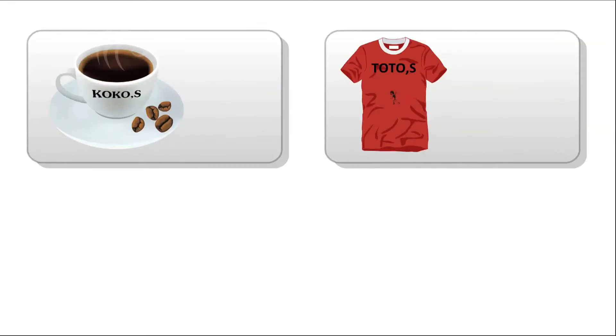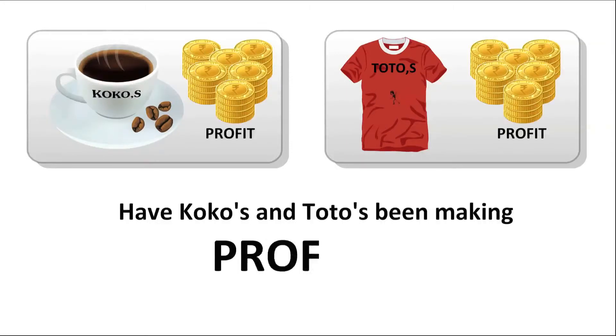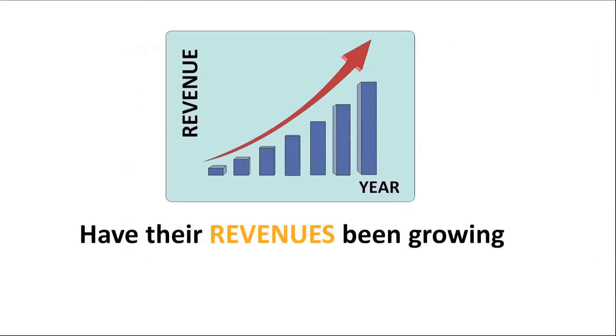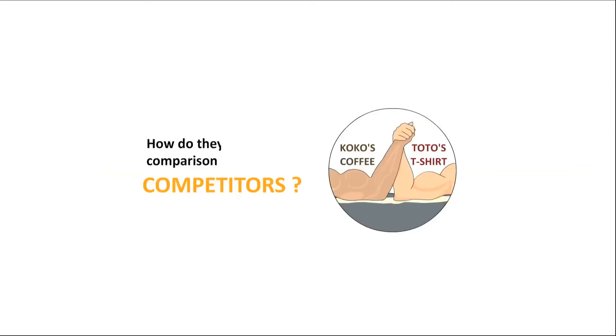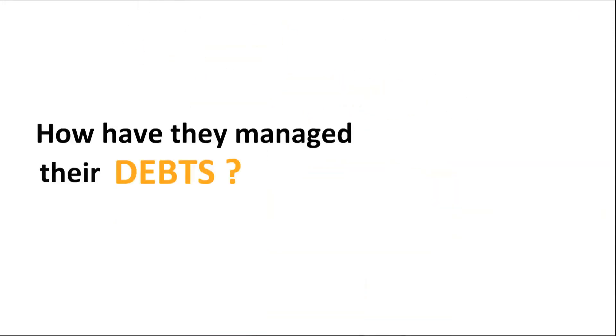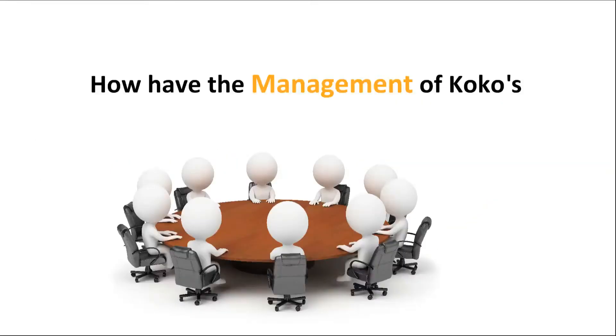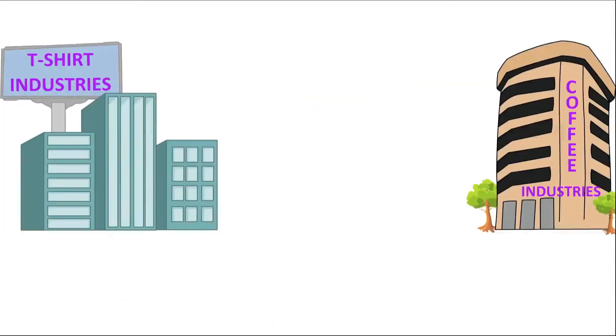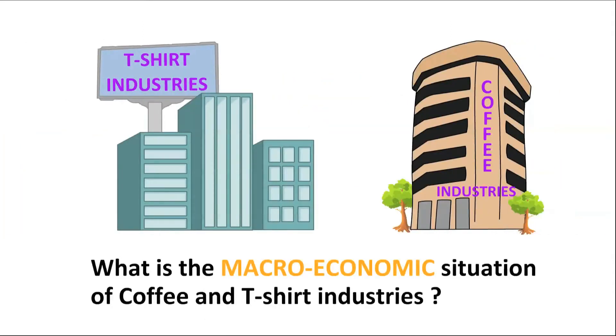Have Coco's and Toto's been making profits? Have their revenues been growing or show potential for future growth? How do they fare in comparison to their competitors? How have they managed their debts? How have the management of Coco's and Toto's performed? What is the macroeconomic situation of the coffee and T-shirt industries?